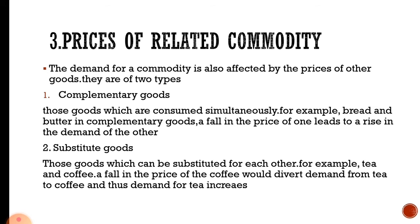The demand for a commodity is also affected by the prices of other goods. They are of two types: complementary goods and substitute goods. In complementary goods, a fall in the price of one leads to a rise in the demand of the other.